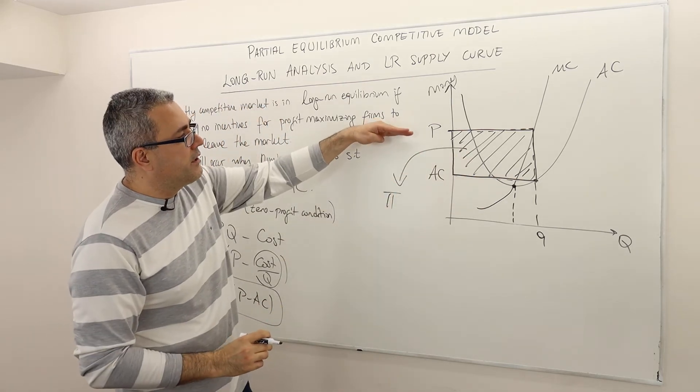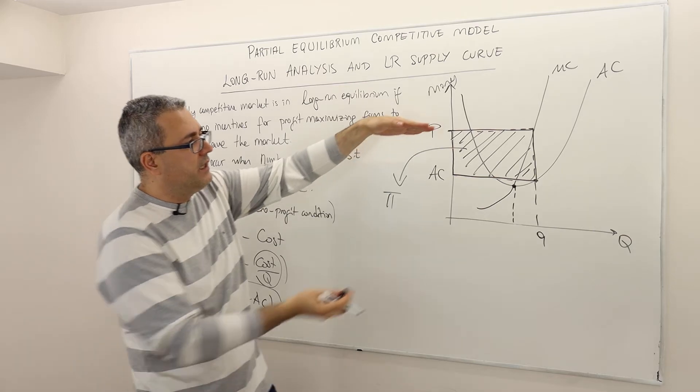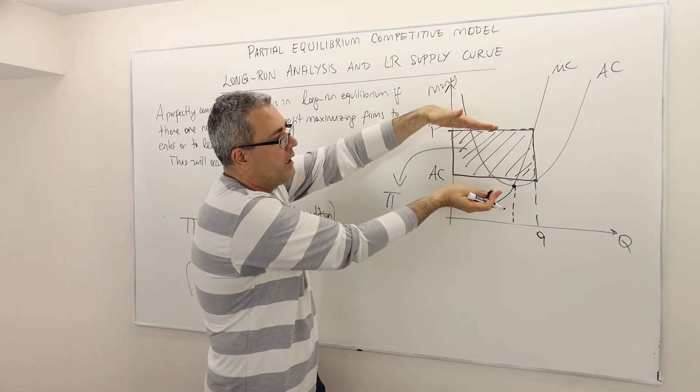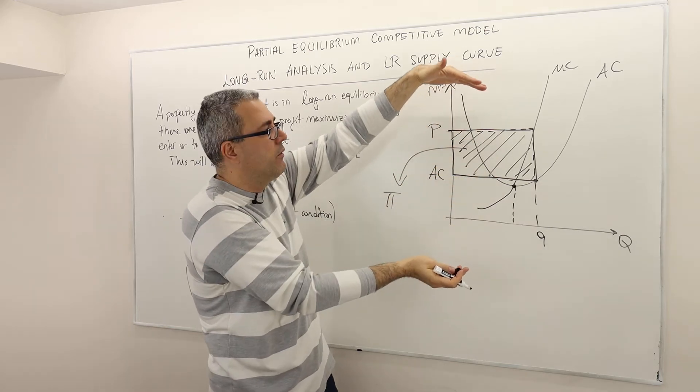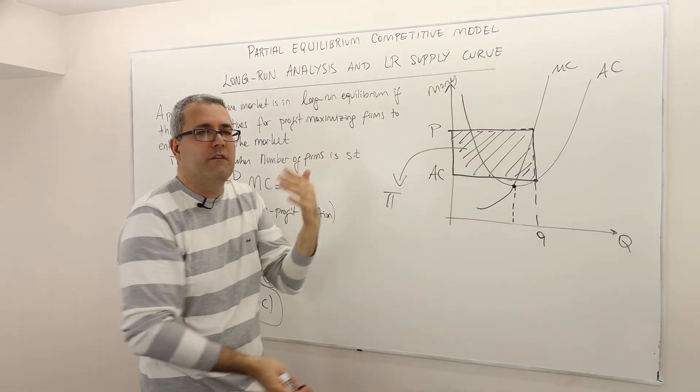So if the market price shrinks or decreases, clearly this area is going to get smaller and smaller. As P increases, this area is going to get larger and larger. So the profit will increase.